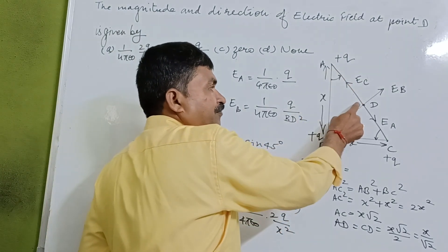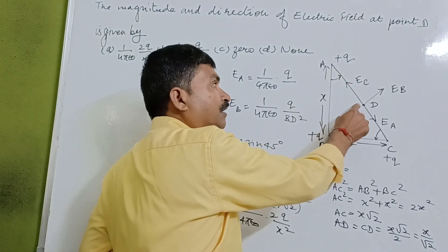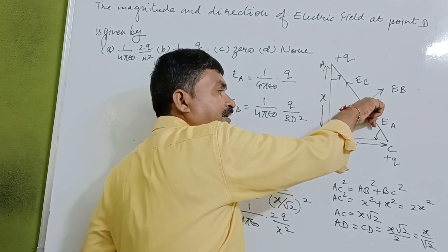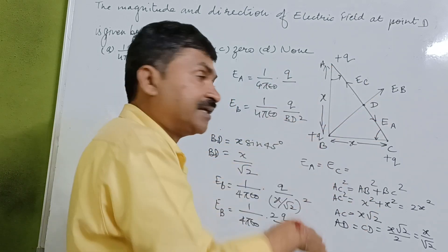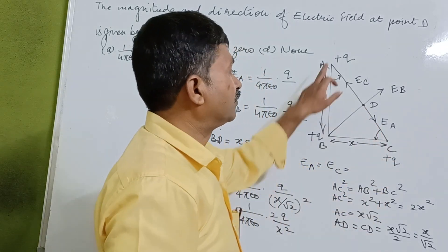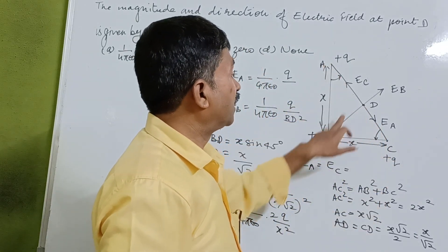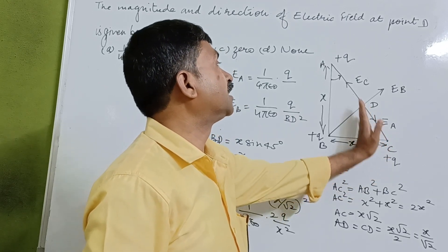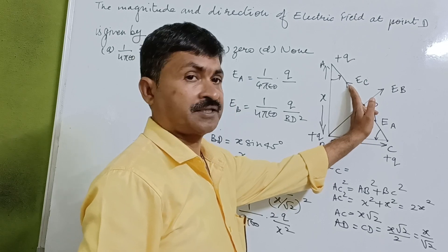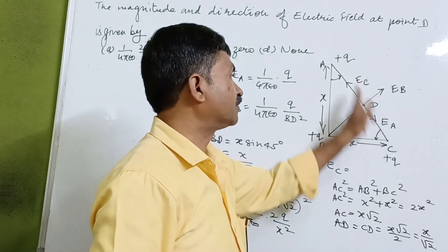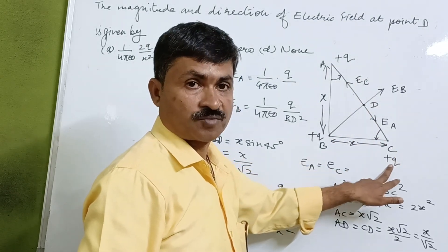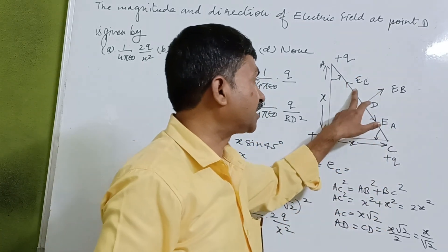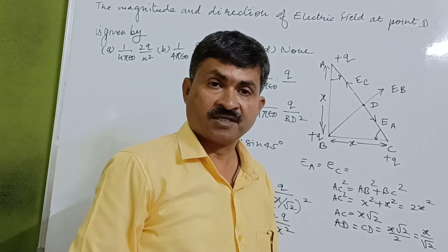If you put a unit positive charge over here, because of this charge it will be repelled in this direction — meaning the electric field is acting from A to C. And because of the positive Q charge, there will be a repulsion in this direction from C to A. Because of this charge, which is also plus Q, these two electric fields are acting in opposite directions to each other.